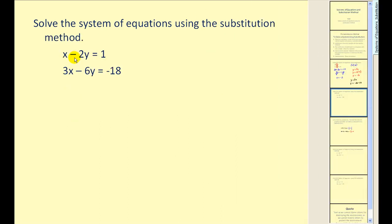Let's try another. Step one is to solve one of the equations for one of the variables. It would be easy to solve this first equation for x. Let's do that. If we add 2y to both sides, we would obtain x equals 1 plus 2y.